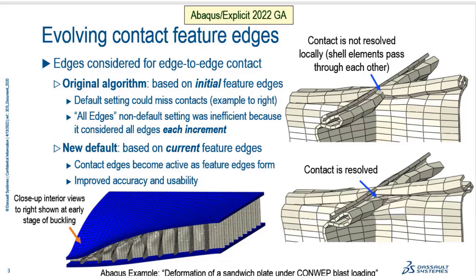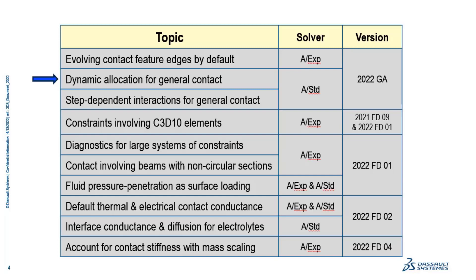The new default is based on current feature edges, so contact edges become active as feature edges form. This improves accuracy and usability. As the buckles form, each increment we consider which edges should be active, and that activates the edges where they're needed, so contact is properly resolved. This is a nice enhancement for usability and accuracy so that the user doesn't need to manually control which edges, based on an initial feature edge criteria, should be active for the analysis.